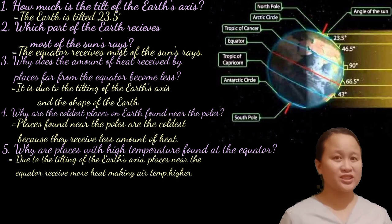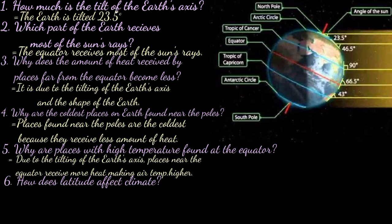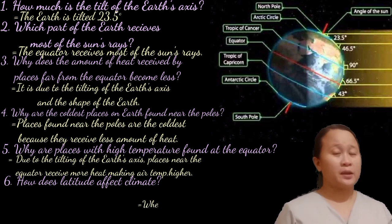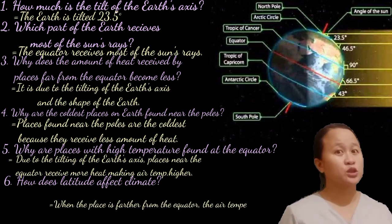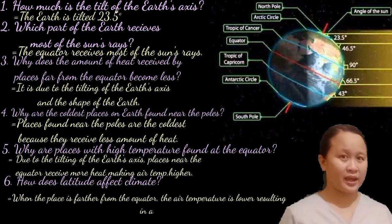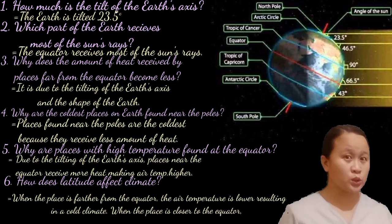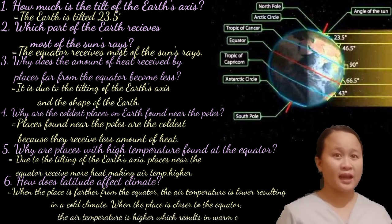The last question is: How does latitude affect climate? The answer is when a place is farther from the equator, the air temperature becomes lower, resulting in cold climate. On the other hand, when a place is closer to the equator, the air temperature becomes higher, resulting in warm climate.